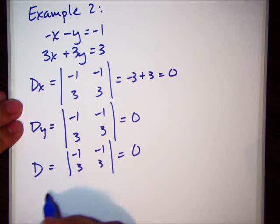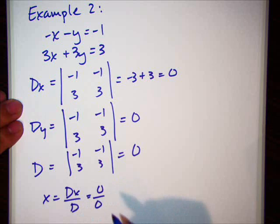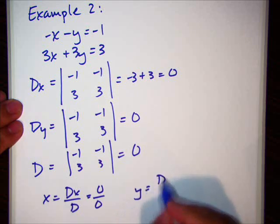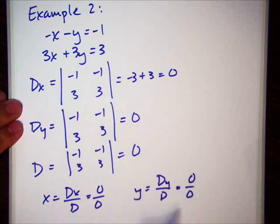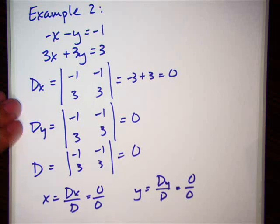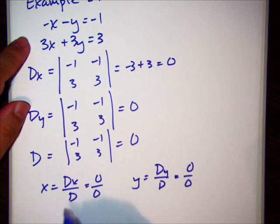Well, so what happens then? Well, x is dx over d. So, this is 0 over 0. y is dy over d. This is also 0 over 0. When we have this, it turns out they're basically the same equation. So, we say there are infinitely many solutions.